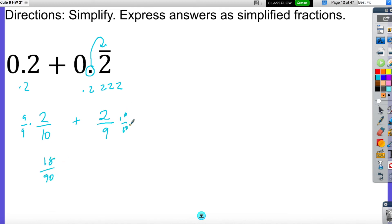On this one, I'm going to multiply the numerator and the denominator by 10, so it'll also be 20 over 90. So when I add these up, I'm going to get 38 over 90. And then all I'm going to do is divide the numerator and the denominator by 2 to get 19 over 45. So this would be my final answer.